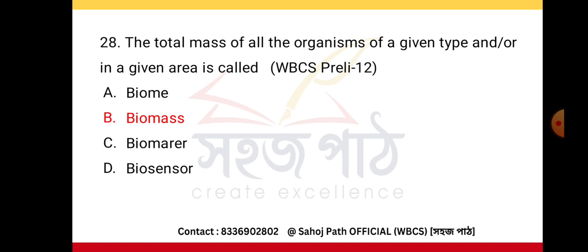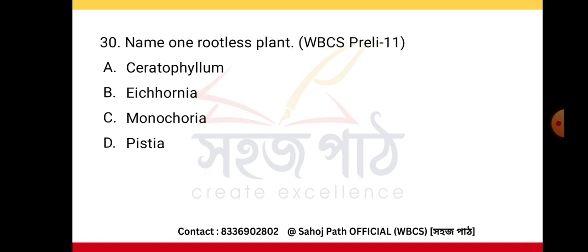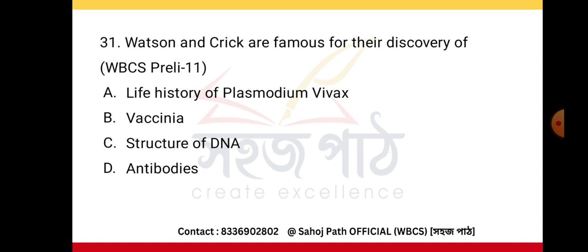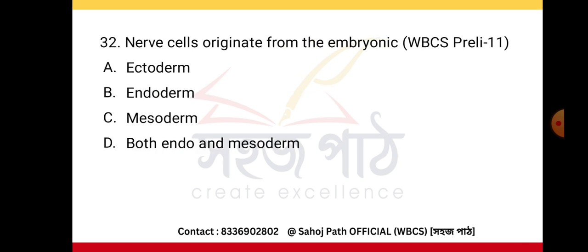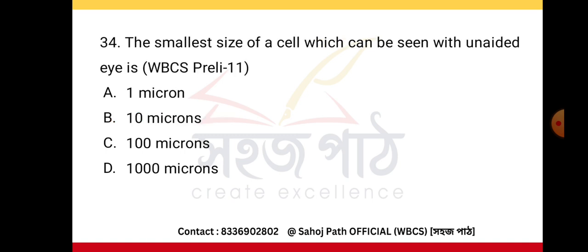The total mass of all organisms of a given type in a given area is called biomass. An example of an endemic plant is Coscinium fenestratum. Rootless plants include Utricularia. Watson and Crick are famous for their discovery of the structure of DNA. Nerve cells originate from the embryonic ectoderm.